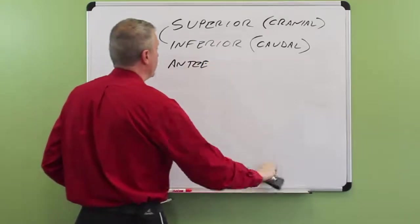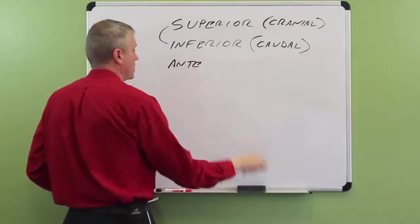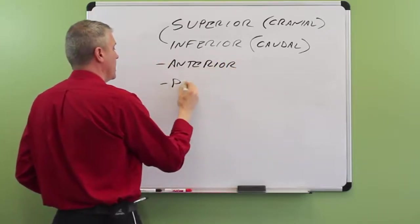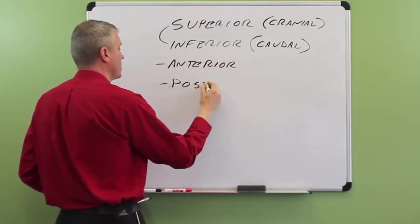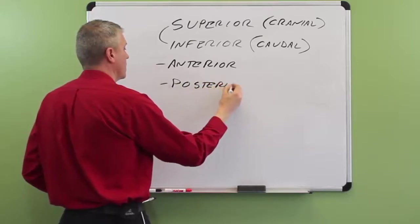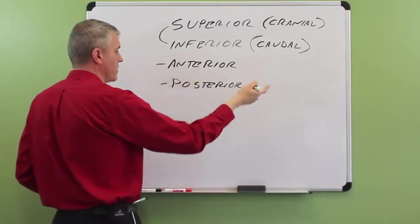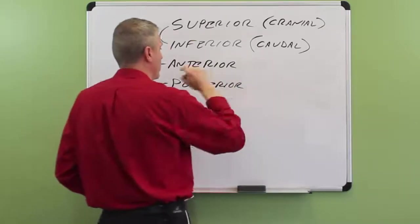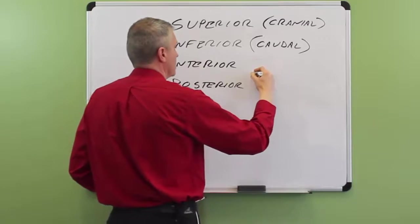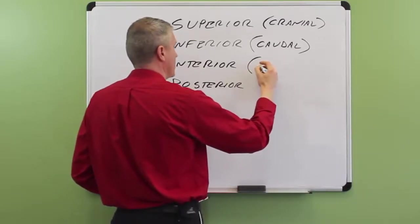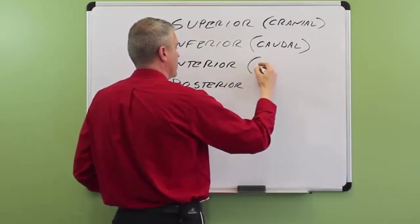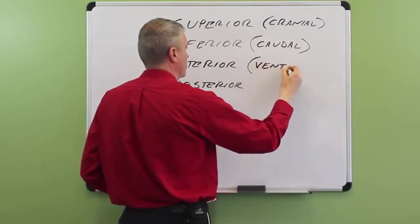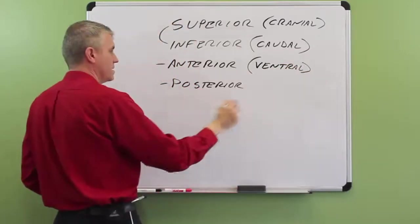Anterior and posterior. Anterior means towards the front of the body, and posterior means towards the back of the body. There's also two words that mean the same thing, at least in humans. Anterior, we also sometimes say ventral. And for posterior, dorsal.